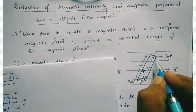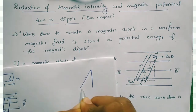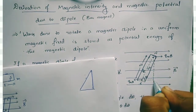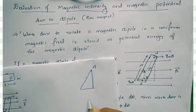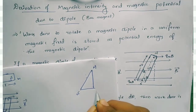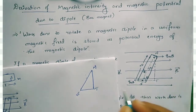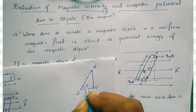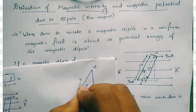The angle theta is created here — this end is taken as N (north) and this end as S (south). The angle is theta, and the bar length is taken as 2l.